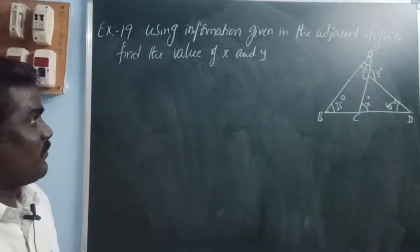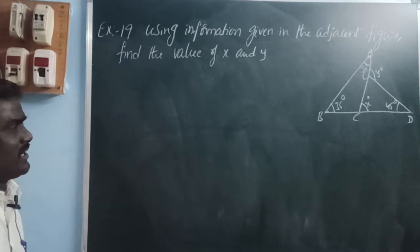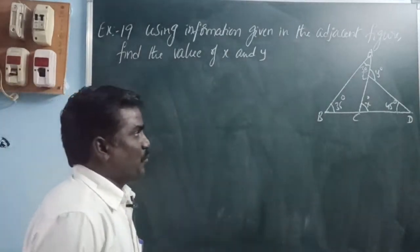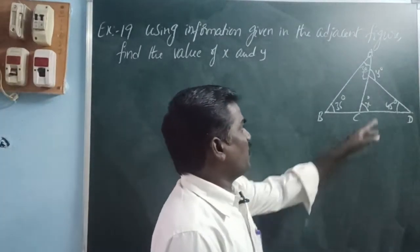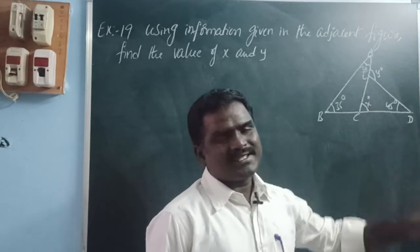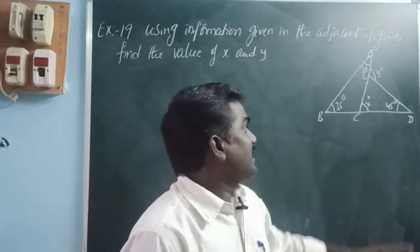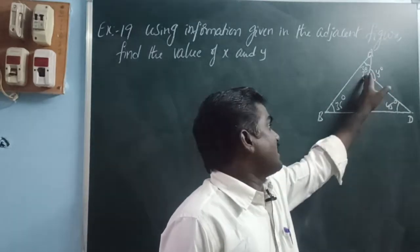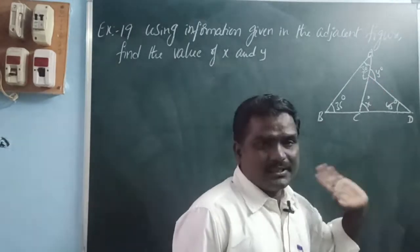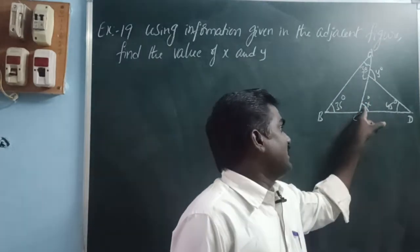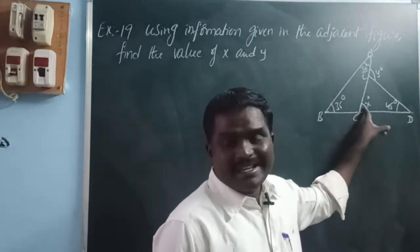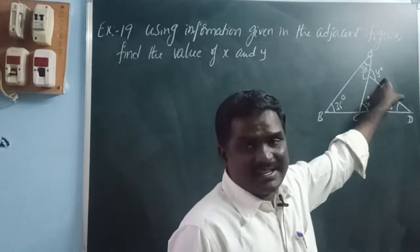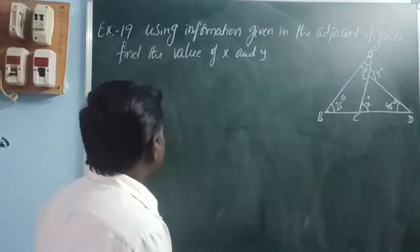Using the information given in the adjacent figure, find the values of X and Y. Here there are two triangles: ABC and ECD. For triangle ABC, angle ACD is an exterior angle. For triangle ECD, angle AED is also an exterior angle.